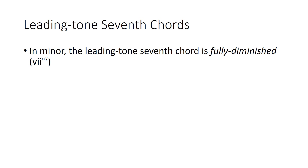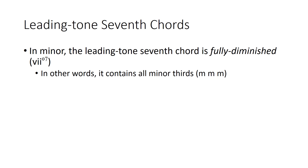In a minor key, we have Ti, Re, Fa, Le — a fully diminished 7th chord. Here's half-diminished, and fully diminished. A fully diminished 7th chord has all minor 3rds — minor, minor, minor — stacked on top of each other.